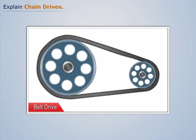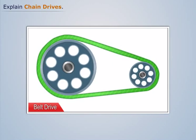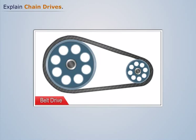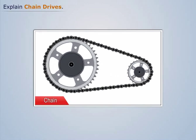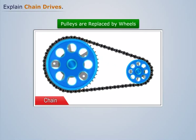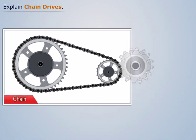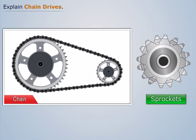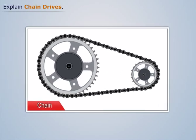To eliminate this problem, the belt is replaced by an endless series of rigid links connected by pin joints known as a chain, and the pulleys are replaced by wheels with projecting teeth of a specific profile known as sprockets. Such drives are called chain drives.